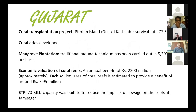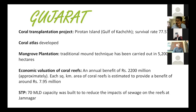In Gujarat, coral transplantation was carried out with WTI and ZSI at Pirotan Island in the Gulf of Kutch, achieving a good survival rate of 77.57%. Despite the high turbidity and heavy sedimentation in the Gulf of Kutch, branching corals have survived and are doing well. They were the first to develop a coral atlas for the Gulf of Kutch, providing species-based information on mapped areas.